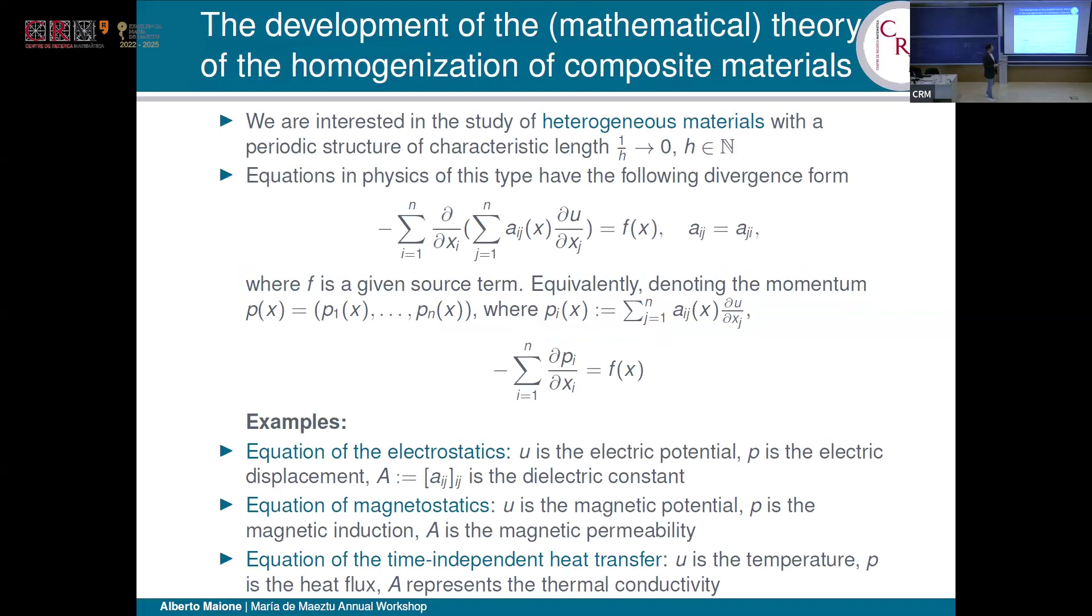The story is the following one. We are interested in the study of heterogeneous materials. So think, for instance, the overlapping of different materials or mixture of different materials with elastic properties or whatever it is. In physics, the equations we are interested in are in divergence form. So we have minus divergence of a matrix A, depending on X because we are interested in heterogeneous materials, times the gradient of U, equal to a source term f. In most 99% of the application, the matrix should be symmetric. But please, if you know examples in which it cannot be symmetric, let me know, because we are looking for them to write a nice introduction. An important role in this theory is played by the momentum, which is the matrix A times the gradient.